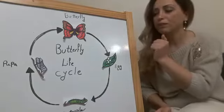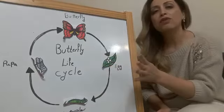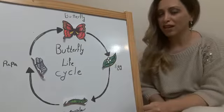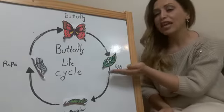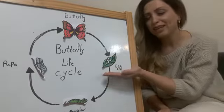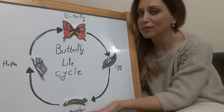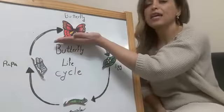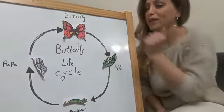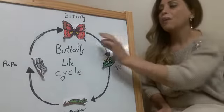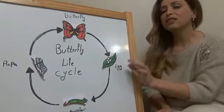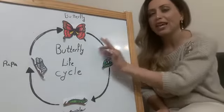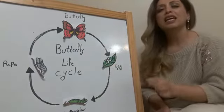There are four different stages of the butterfly life cycle: stage one, egg; stage two, caterpillar; stage three, pupa; and stage four, butterfly. A butterfly's life starts from a tiny little egg.